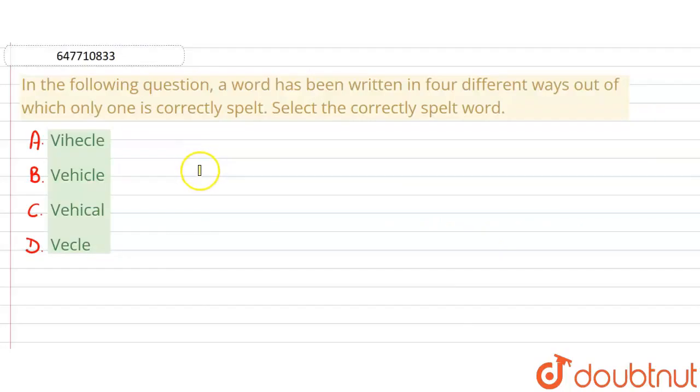Hello everyone, the question is: a word has been written in four different ways, out of which only one is correctly spelled. Select the correctly spelled word. It's written in four different ways. Let's tell us which spelling will be correct for the vehicle.